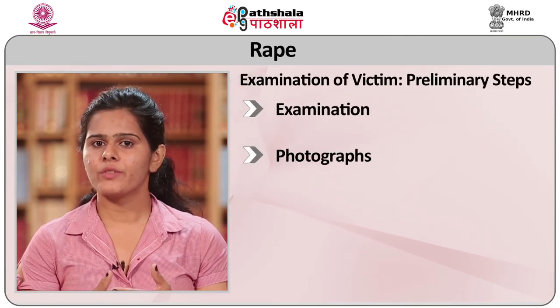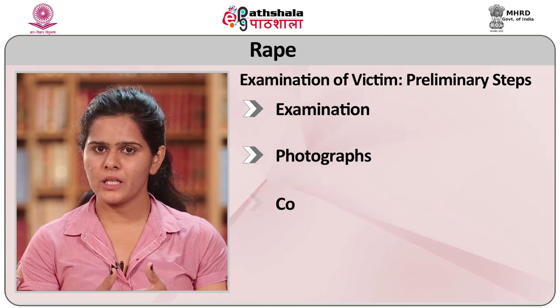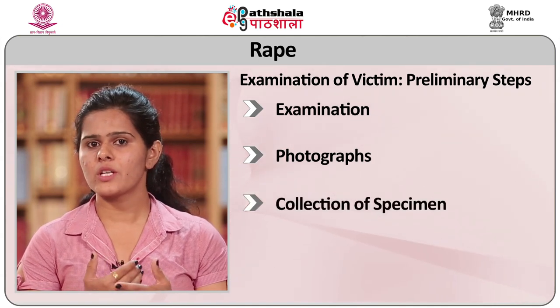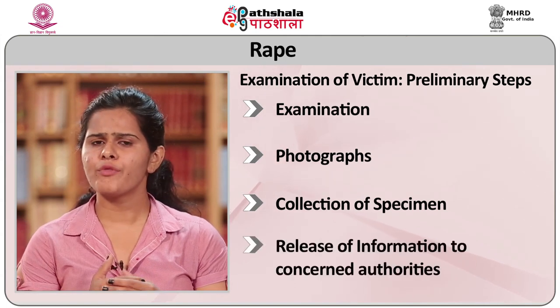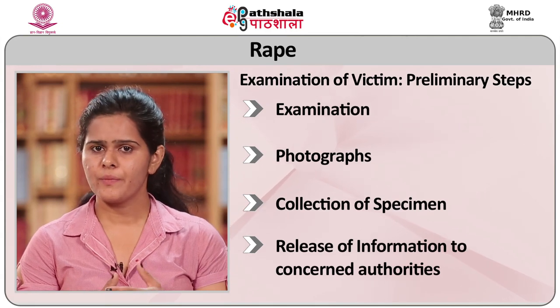The preliminary steps for forensic examination of rape: the examination should proceed only when asked by a police officer or magistrate. The first step is to obtain written consent from the victim for examination of the crime scene, photography of the crime scene, and collection of all specimens found at the crime scene, and release of information to concerned authorities. If the victim is under 12 years or insane, written consent must be obtained from her parents or guardians.